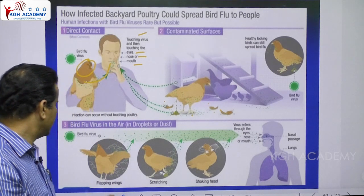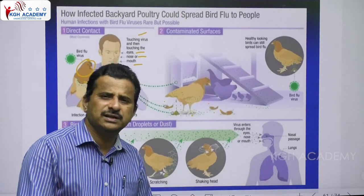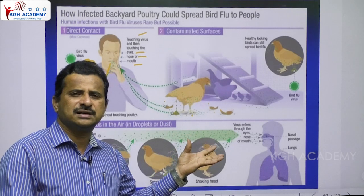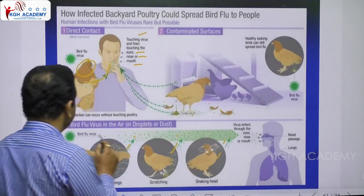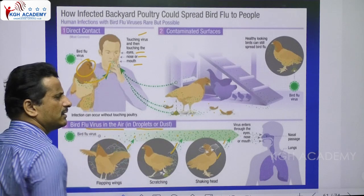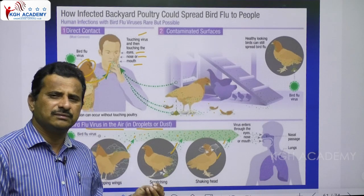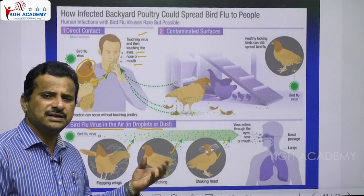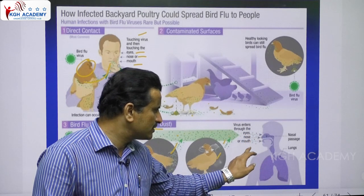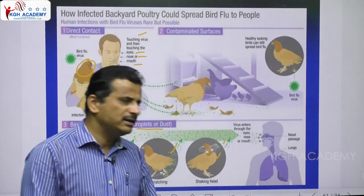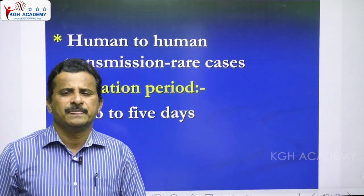Flapping wings, moving, scratching, and shaking of the head by birds causes the virus to spread into the surrounding area or enter the air. Bird flu virus can be present in the air in droplets or dust because of birds' movement and their dried feces. Virus-containing dust or virus-containing droplets enter the air, and when you inhale them, they enter the body through the eyes, nose, and mouth, and finally into the lungs.